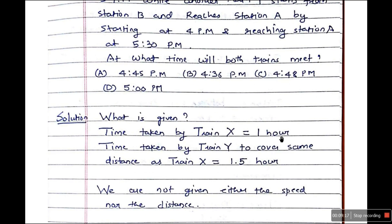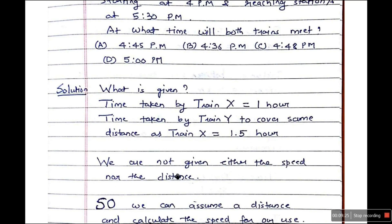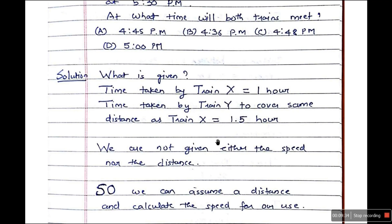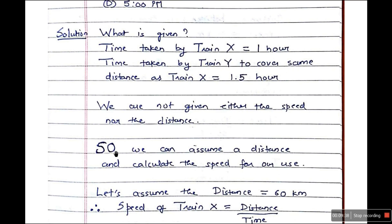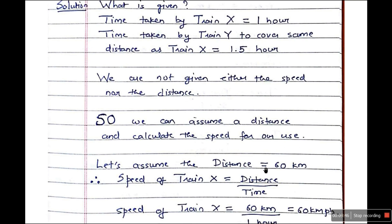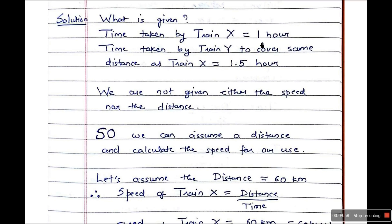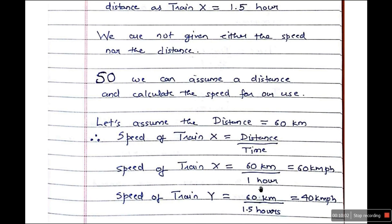Time taken by train X is 1 hour. Time taken by train Y to cover the same distance is 1.5 hours. We are not given either speed or distance, so instead of using X, I'm going to suggest a simpler method — my shortcut. We can assume a distance and calculate the speeds. Using 60 km as the distance between the two stations: speed of train X is 60/1 = 60 km per hour; speed of train Y is 60/1.5 = 40 km per hour. Now we have the speeds and the distance.